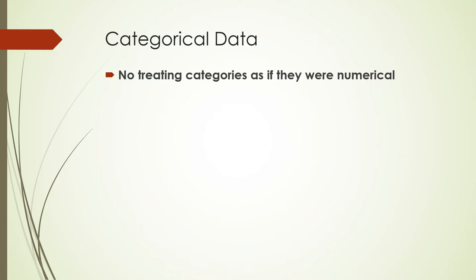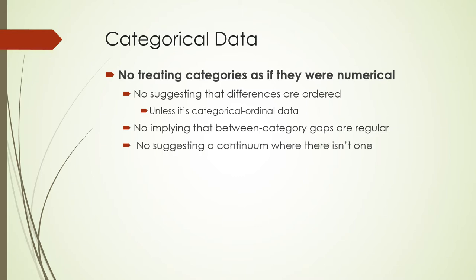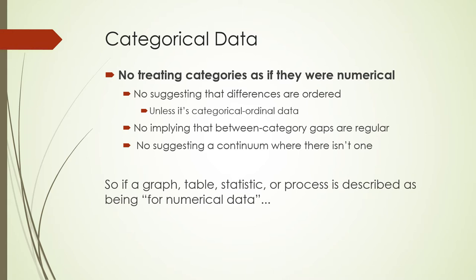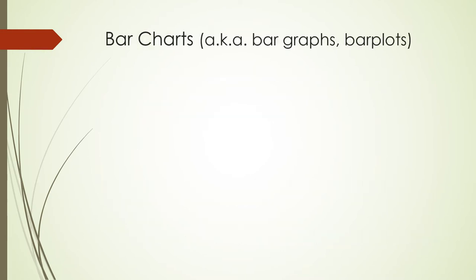Here's an important rule: no treating categories as if they were numerical. You can't take categorical data and pretend like it's numerical, which means you can't pretend like differences are ordered if they're not ordered. For ordered differences, you can't imply that the between-category gaps are regular if they're not. So you can't suggest there's a continuum where there isn't one. If anything you learn in this class is described as something you use with numerical data, don't use it with categorical data. That's important — you have to tell the two types apart.